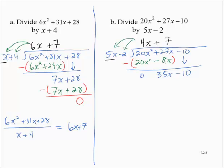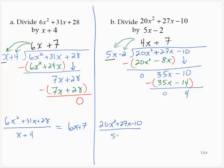Multiplying back: 7 times 5x is 35x, and 7 times negative 2 is negative 14. Subtracting that entire quantity: 35x minus 35x is 0. Negative 10 minus negative 14 is negative 10 plus 14, which is positive 4. So we have a remainder this time — the remainder is 4. Therefore, 20x squared plus 27x minus 10 divided by 5x minus 2 is equal to 4x plus 7 plus 4 over 5x minus 2.